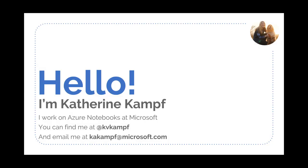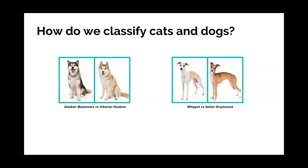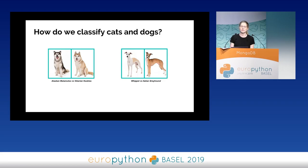I'm Katherine Kampf. I work for Microsoft as a program manager on a product called Azure Notebooks, which is our free Azure-hosted Jupyter Notebook service. The most important thing to know about me is I really love dogs. Even knowing a bunch of dog breeds, it's still sometimes difficult to tell them apart — Alaskan Malamutes and Siberian Huskies can look super similar. When you're trying to train a machine to understand this, you need a ton of data to successfully distinguish between different breeds.